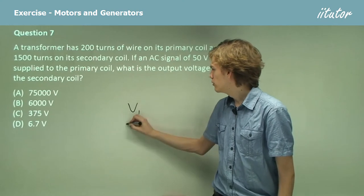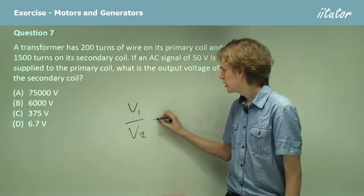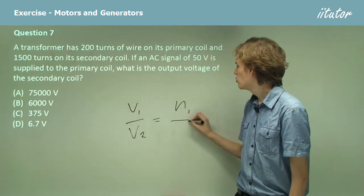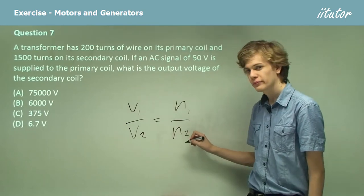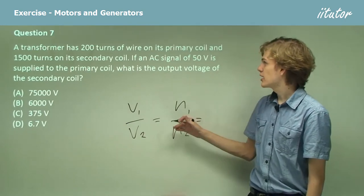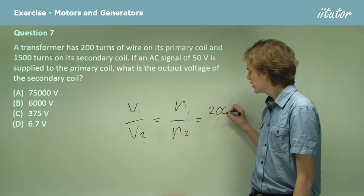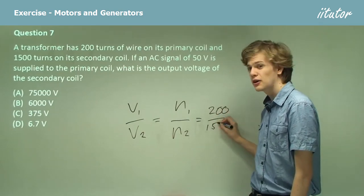So, V1 over V2 equals N1 over N2. And so in this case, N1 will be 200 and N2 will be 1,500.